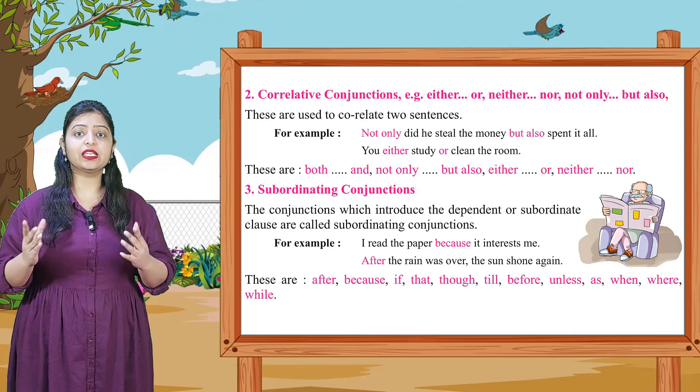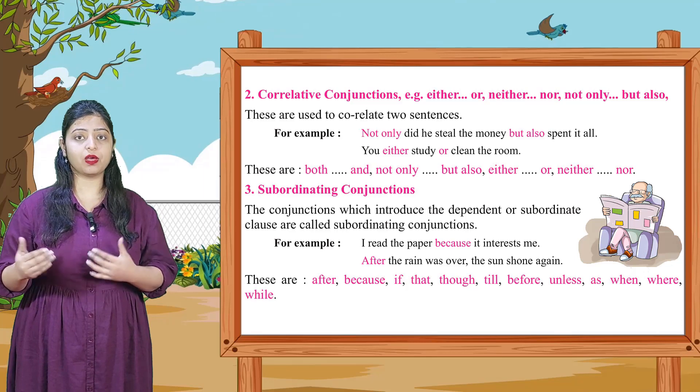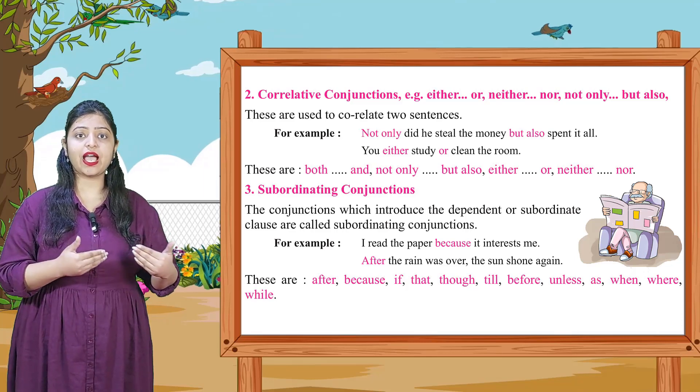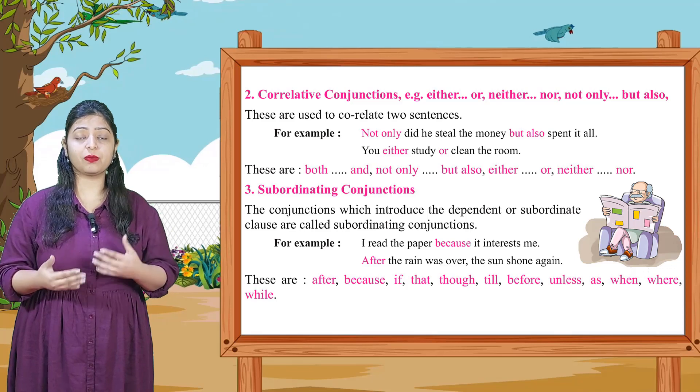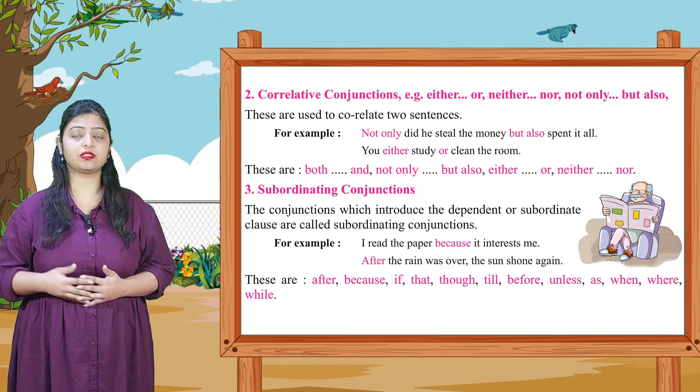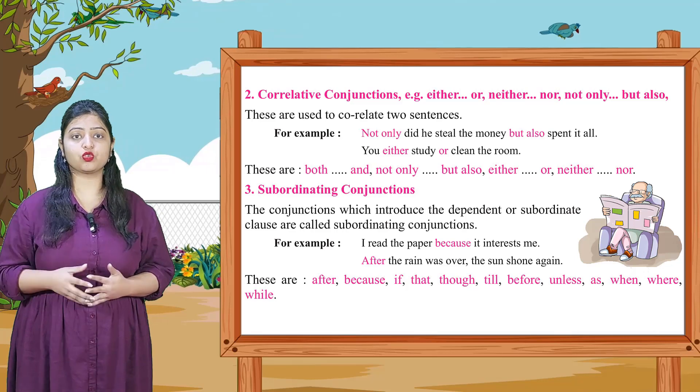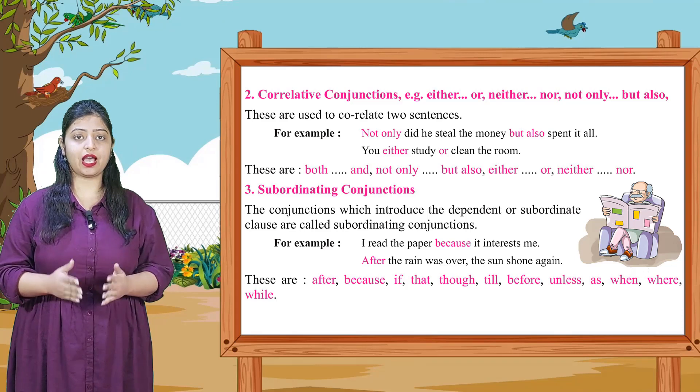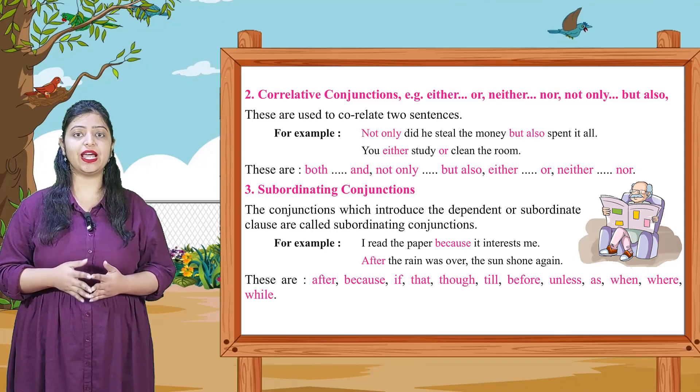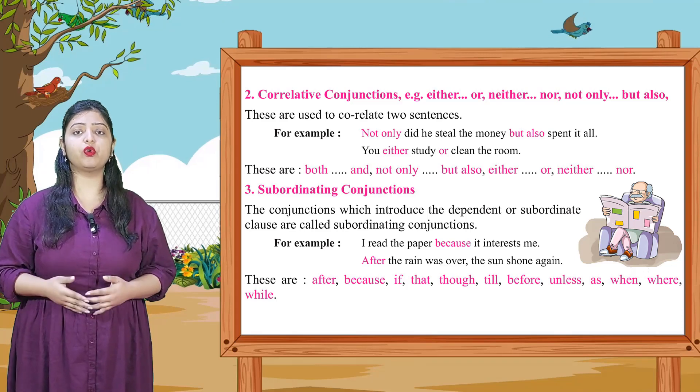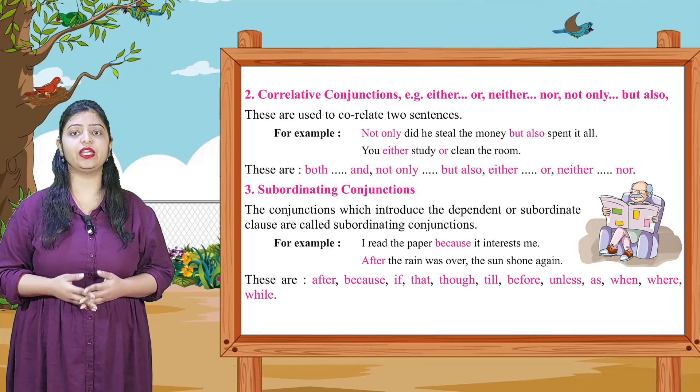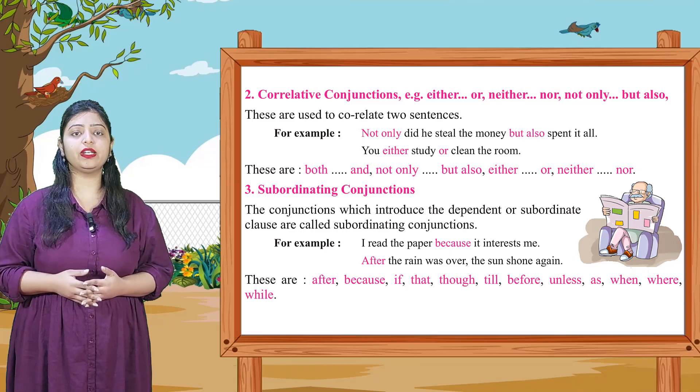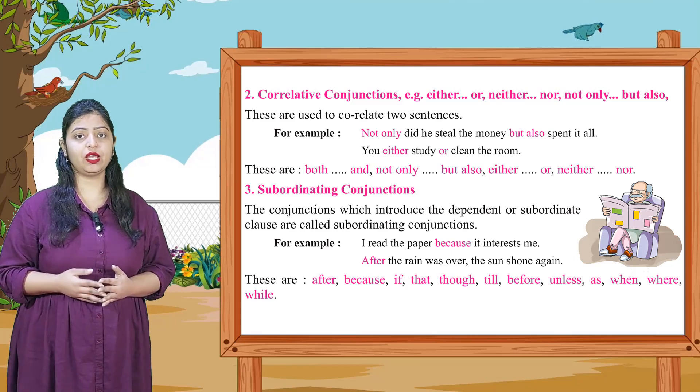They are dependent on some object. If we just say because, it won't make sense. So here when we say I read the paper because, we are giving a reason why I read the paper, because it interests me. So here because is used as a subordinating conjunction. These are after, because, if, that, though, till, before, unless, as, when, where, while. So these are examples of subordinating conjunctions.